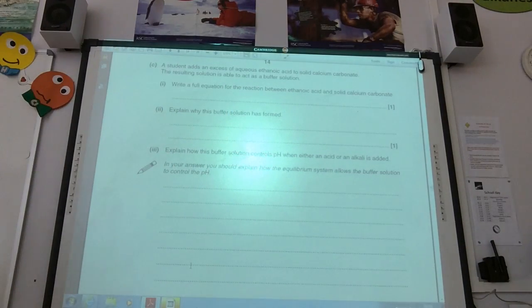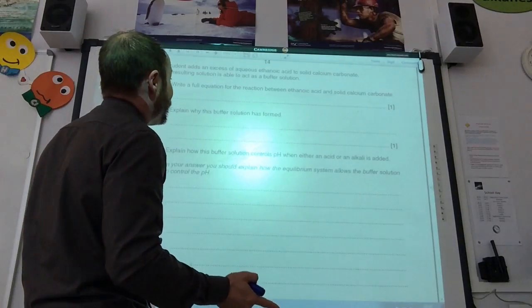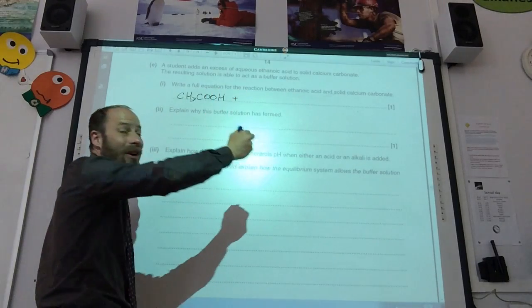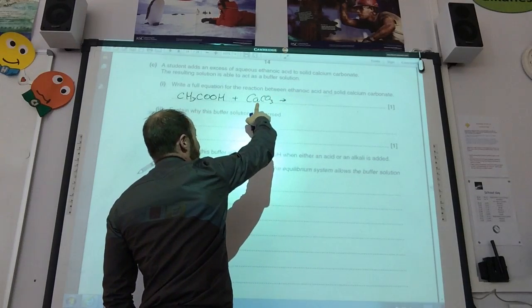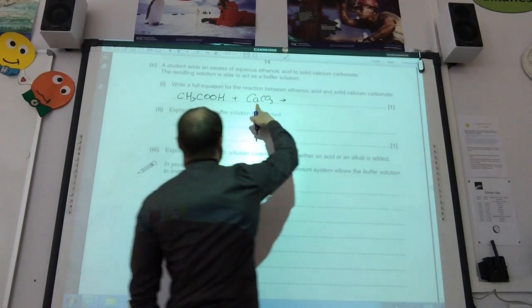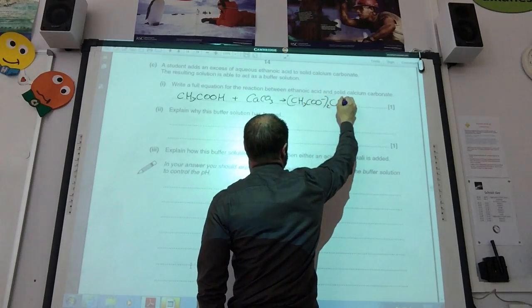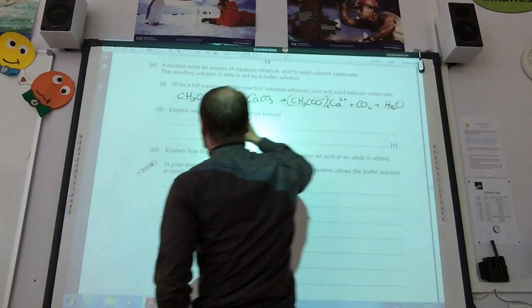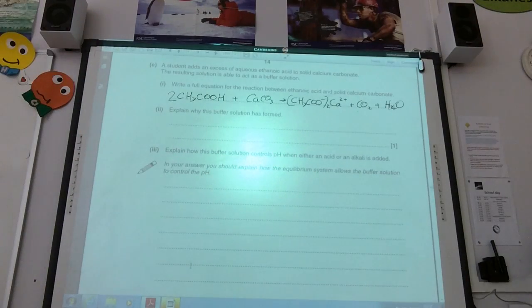A student adds ethanoic acid and calcium carbonate, which can act as a buffer. So writing the full equation: ethanoic acid CH3COOH, calcium carbonate CaCO3. The charge on the calcium ion is 2+, so I need two of my ethanoates to balance it, and then I need CO2 because it's a carbonate, and H2O. So I'm going to need two of those to make it balance out.